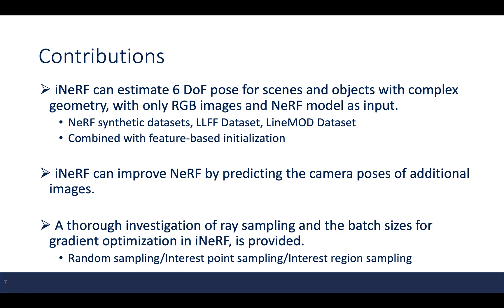The contributions of the paper include: firstly, iNeRF can estimate a 6-degree-of-freedom pose for scenes and objects with complex geometry, using only RGB images and a NeRF model as input, without 3D shapes or depth sensing information. The authors tested the models on three different datasets and also proposed a Fisher-based initialization method. Secondly, iNeRF can improve NeRF by predicting the camera poses of additional images. Finally, a thorough investigation of ray sampling and batch sizes is provided.